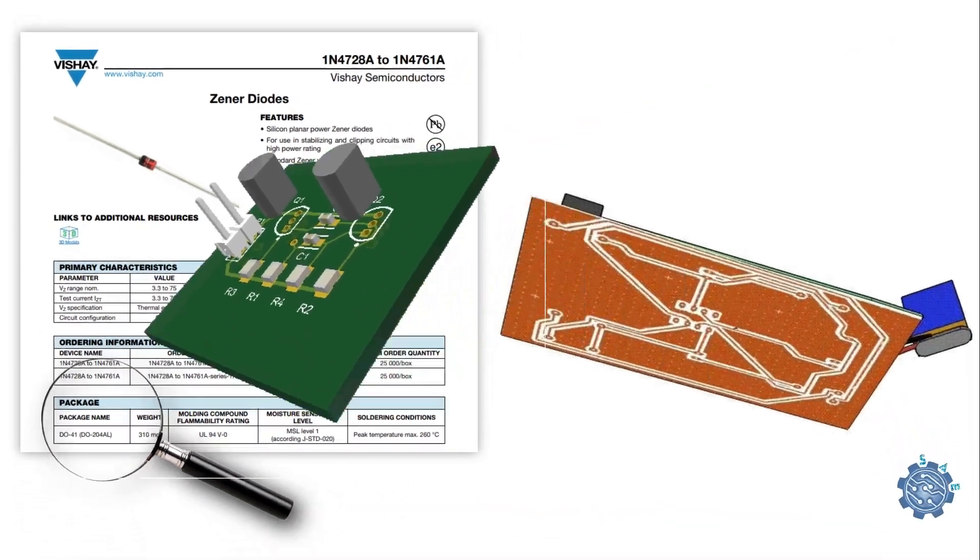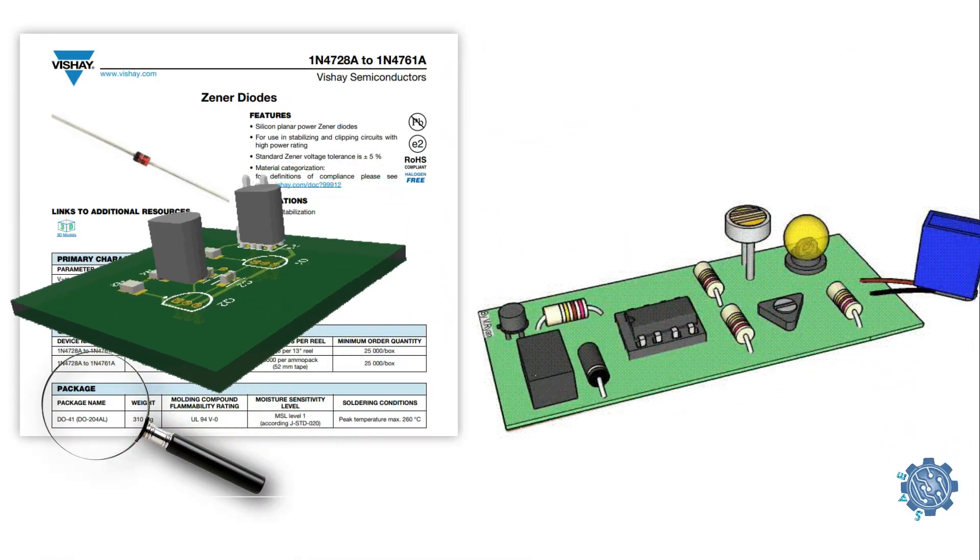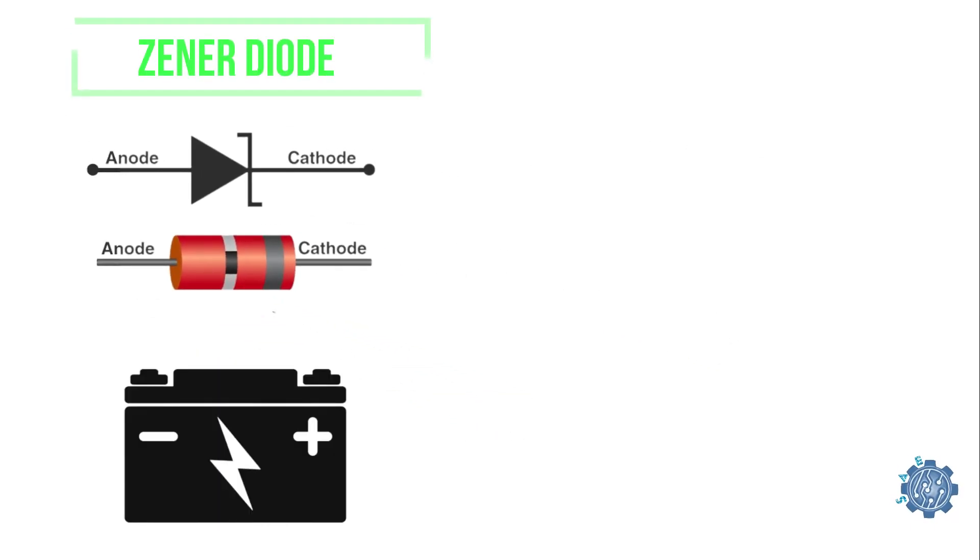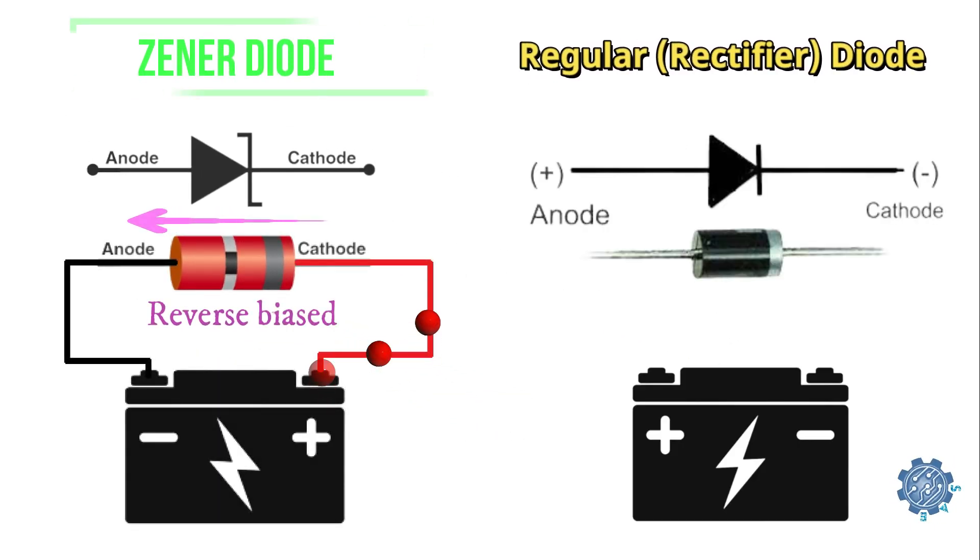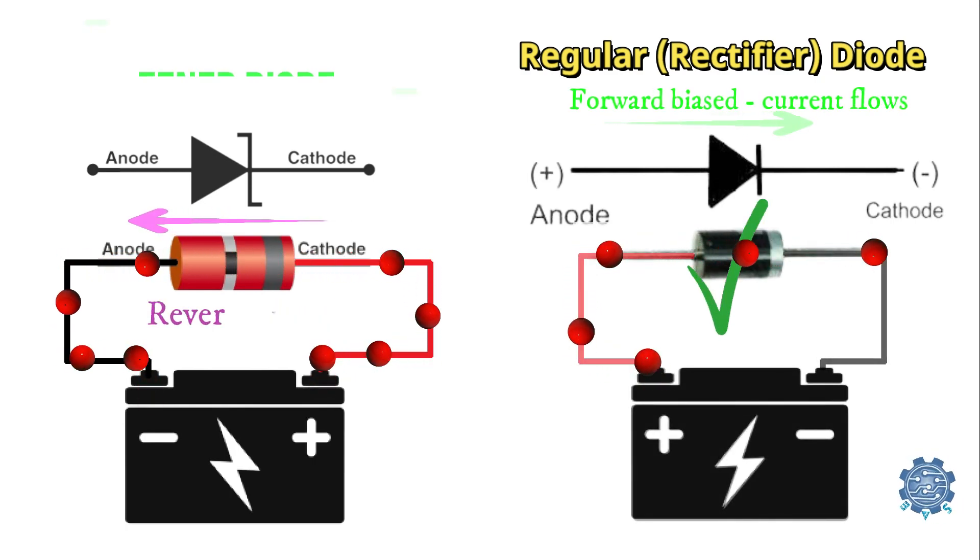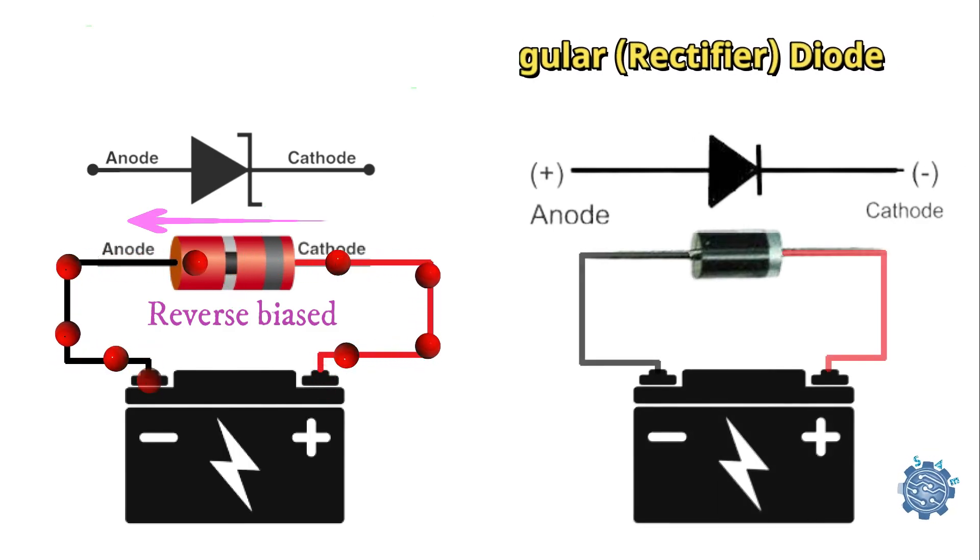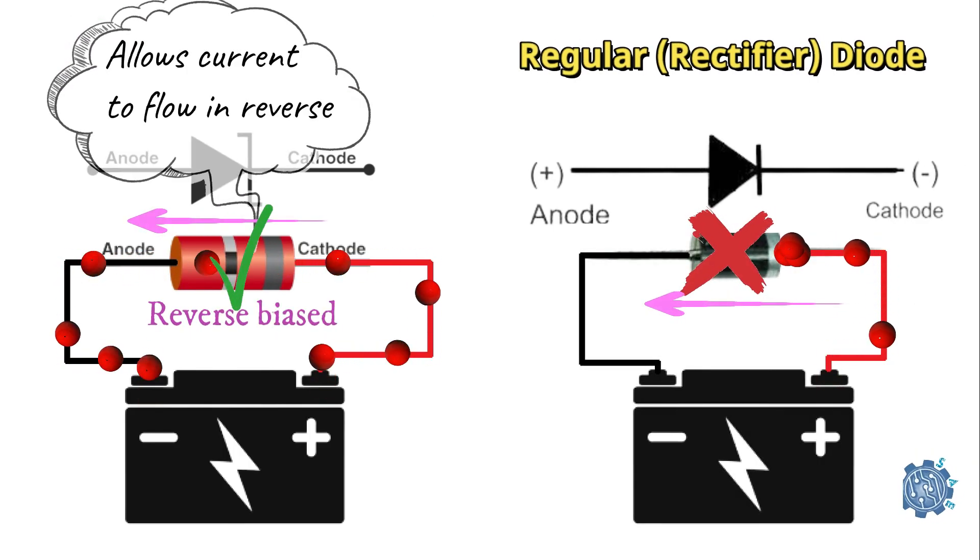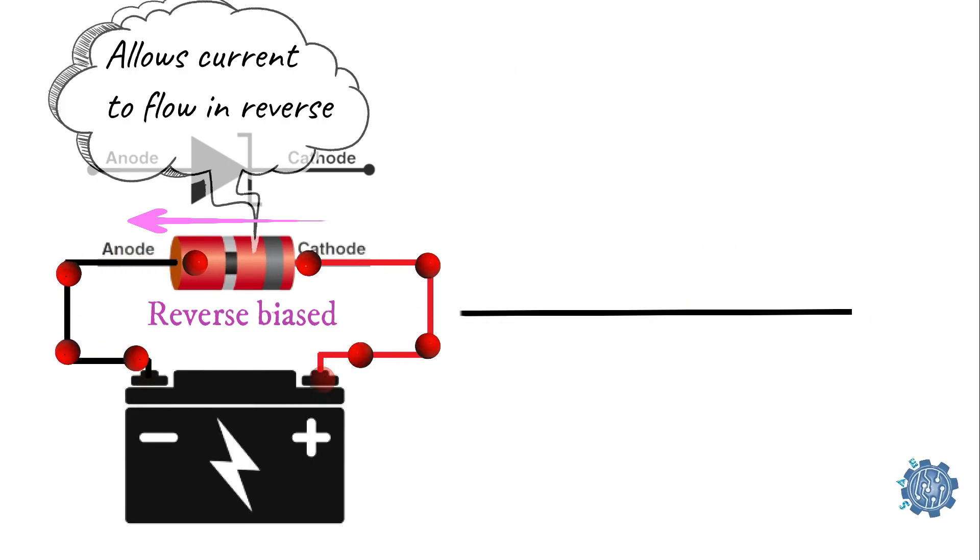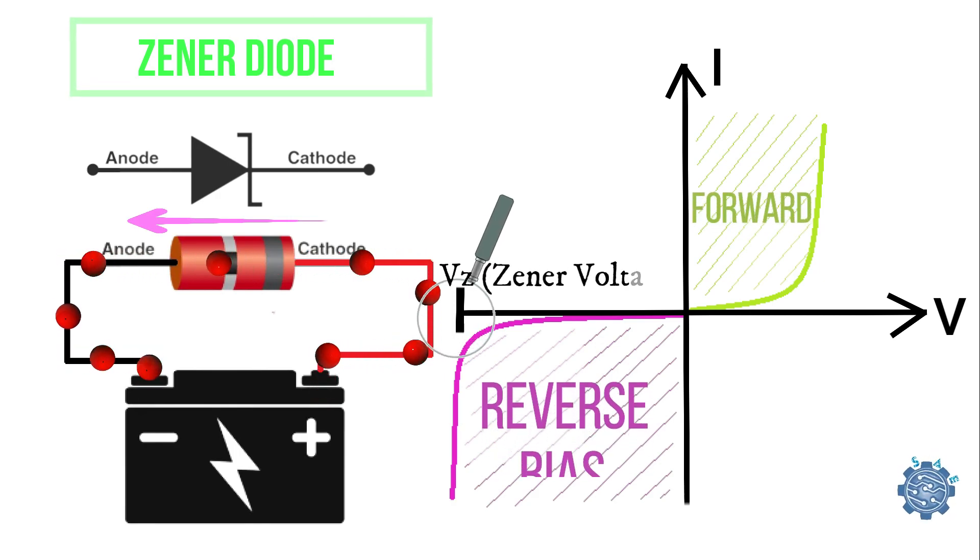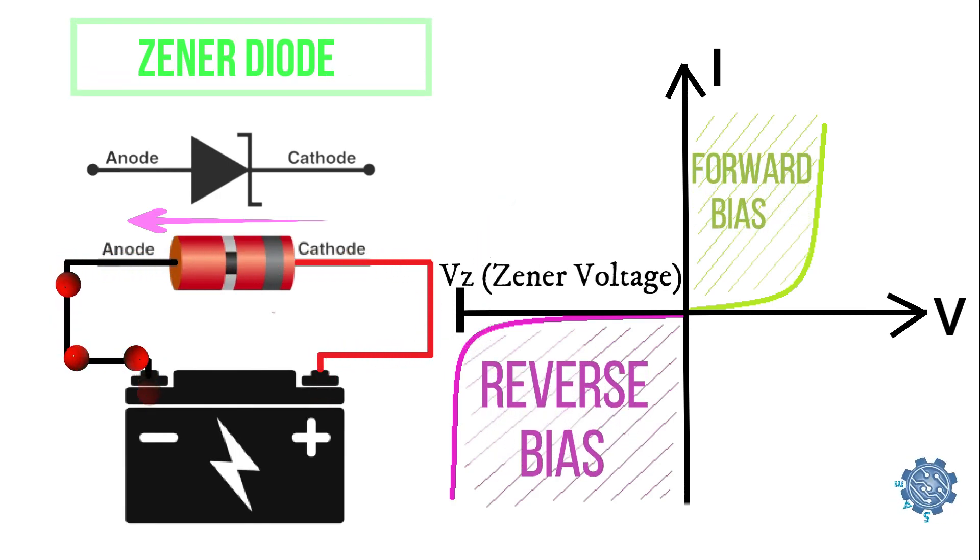A Zener diode is a specialized type of diode that operates in the reverse bias region. Unlike regular diodes which conduct current in the forward bias region and block current in the reverse bias region, a Zener diode is designed to conduct current in the reverse bias region when a certain voltage called the Zener voltage is reached or exceeded.